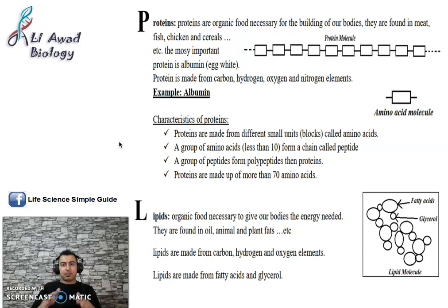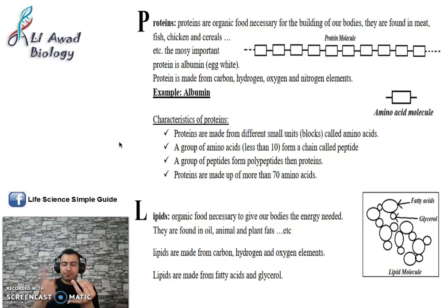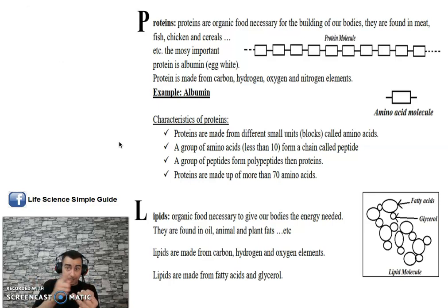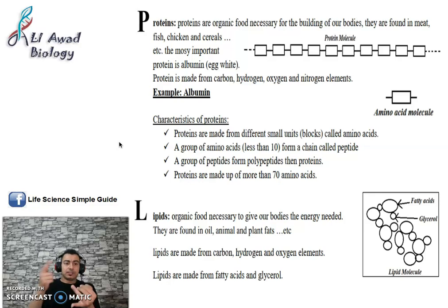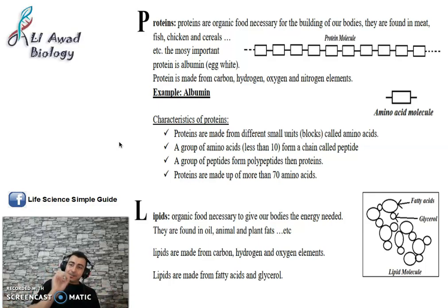Today I'm going to talk about lipids. What do we mean by lipids? Lipids are an organic food. We take lipids from animals or plants. Since it is organic, it means it contains carbon, hydrogen, oxygen, etc. Like proteins and carbohydrates, lipids are a chemical substance.